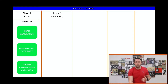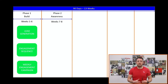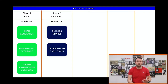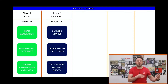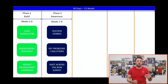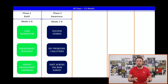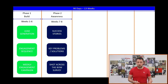Phase two is the awareness phase. This is where you build awareness of both the specific problems that you solve with your signature program and the opportunities that exist for people if they were to achieve the ultimate transformation you know is possible for them. One of the best ways to do this is by sharing case studies and success stories. Depending on the format for your pre-launch, this phase can be two to two and a half weeks. During this period, I like to step up the frequency of my emails from once a week to twice a week.